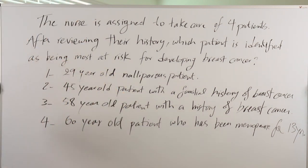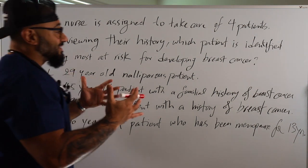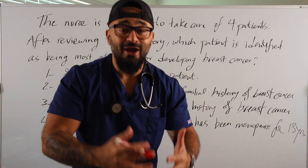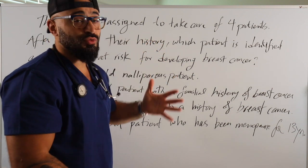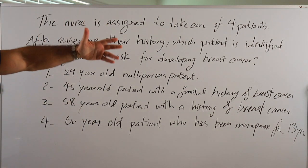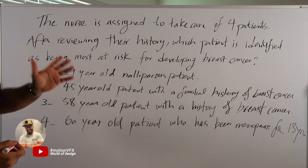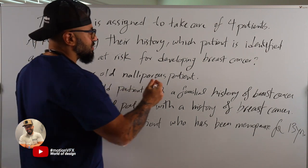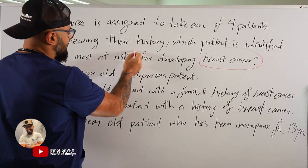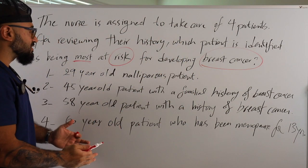The nurse is assigned to take care of four patients. After reviewing their history — medical or surgical history — which patient is identified as being most at risk for developing breast cancer? Reading it the second time, I'm looking for keywords. Breast cancer and risk are the keywords. Most at risk for developing breast cancer — those are my keywords.